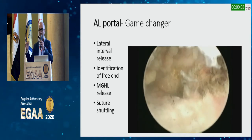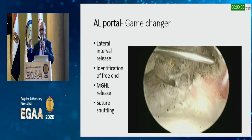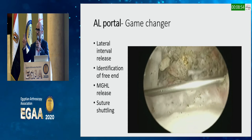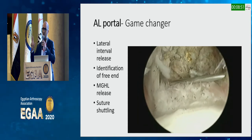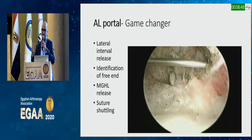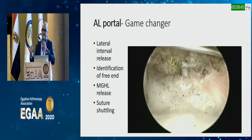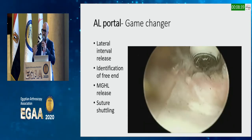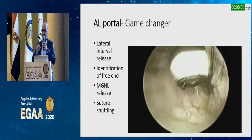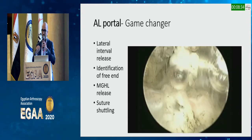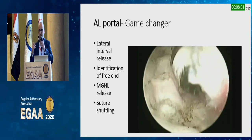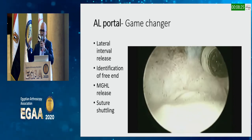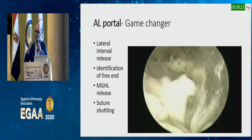The most important step is to create the antero-lateral portal, located outside-in, right above the upper border of the subscap. This portal is used for four important steps. The first is to complete your lateral interval release — you need to clear up the tissue from the lateral interval and be aggressive, because you have to find the free end of the subscap. Most tissue here is just fibrous tissue from trials of healing.